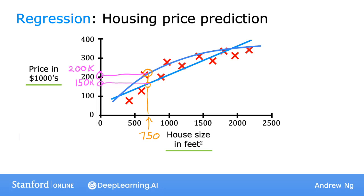What you've seen in this example is supervised learning, because we gave the algorithm a dataset in which the right answer — that is, the label or correct price y — is given for every house on the plot. The task of the learning algorithm is to produce more of these right answers, specifically predicting the likely price for other houses like your friend's house.